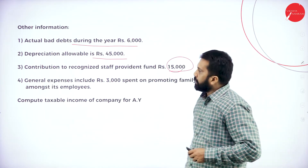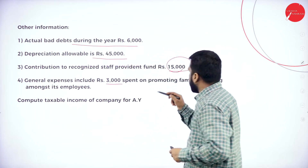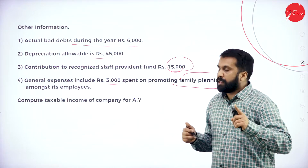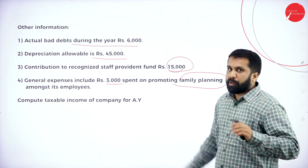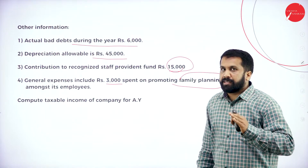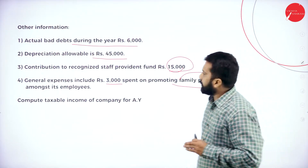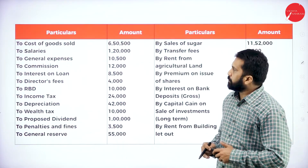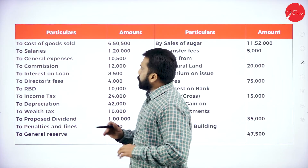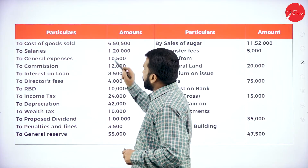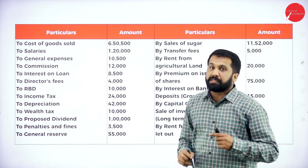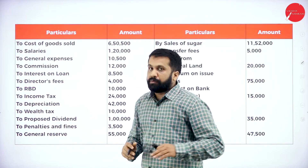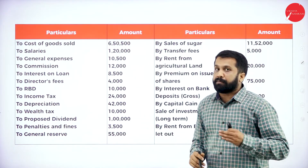General expenses include 3,000 spent on promoting family planning. This will not come under disallowed — it is a part of your business only. Cost of goods sold will not come. Salary will not come. General expenditure, even though family planning expenses are included, we are not supposed to consider. Commission — no. Interest on loan — we have to assume that it is taken for business purpose.